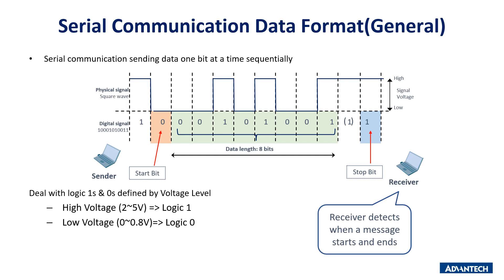Now we will explain the rules and formats in serial communication. In the transmission schematic, the physical signal is represented as voltage with two states: high or low. High voltage ranges from 2 to 5 volts and low voltage from 0 to 0.8 volts. When voltage is high, the digital signal is 1; when voltage is low, the digital signal is 0.